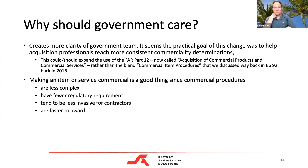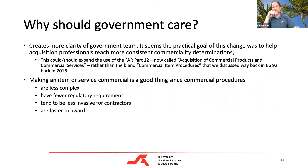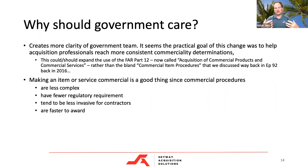For example, the title of FAR Part 12 used to be 'commercial item procedures,' which prompted debate over whether services were included. Now FAR Part 12 is called 'Acquisition of Commercial Products and Commercial Services.' That specificity in the title shows they're moving in the right direction. From a contracting officer perspective, commercial contracts are less complex — fewer clauses, less time to synopsize.